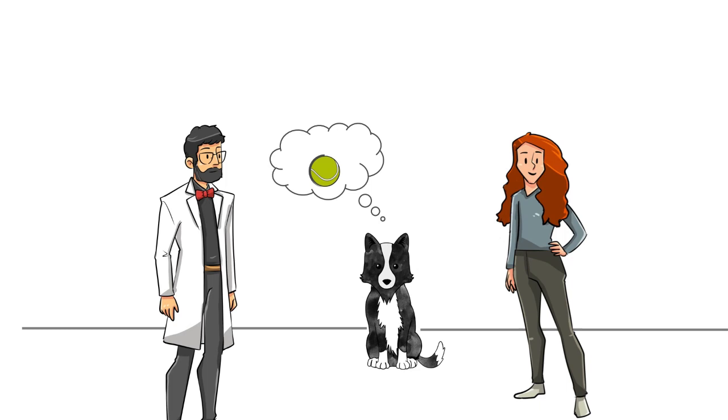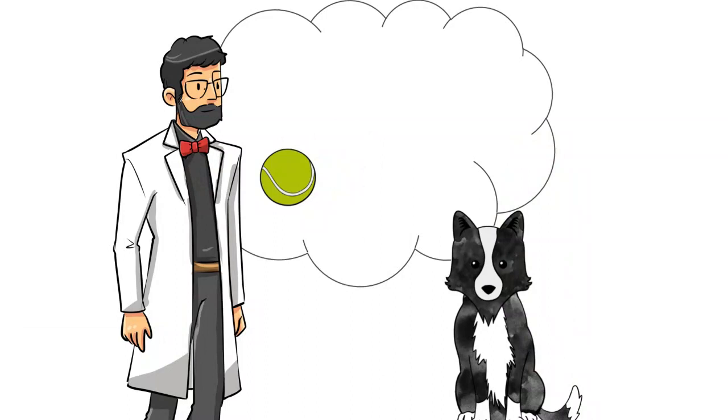When your dog thinks about a ball, what does she imagine? Maybe the shape of the ball? Its smell? Or the way the ball feels in her mouth?